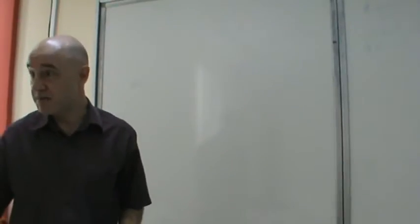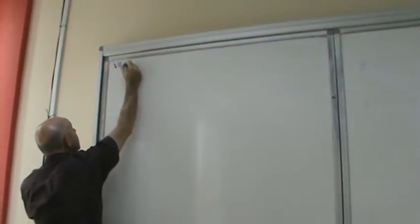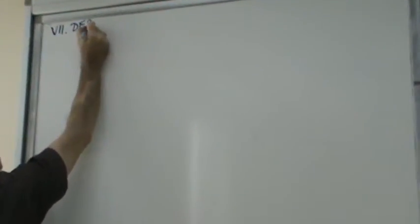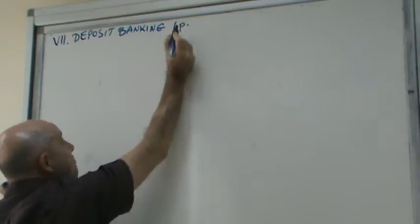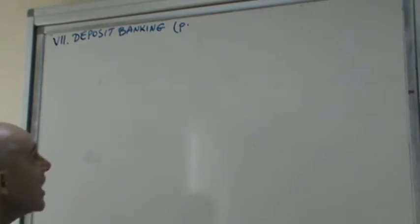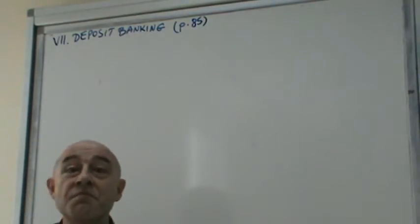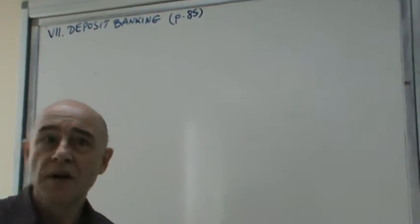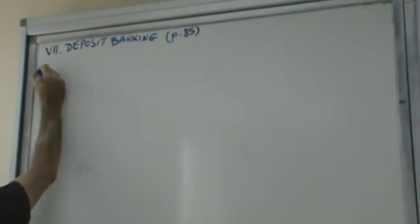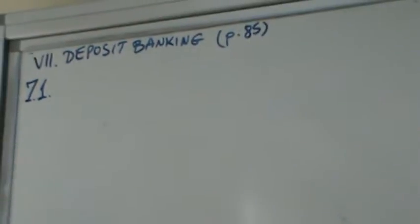Chapter 7, Deposit Banking — that's where we are, page 85. I'll try to remind myself what I was supposed to teach and remind you what was going on. Section 1 was Warehouse Receipts.